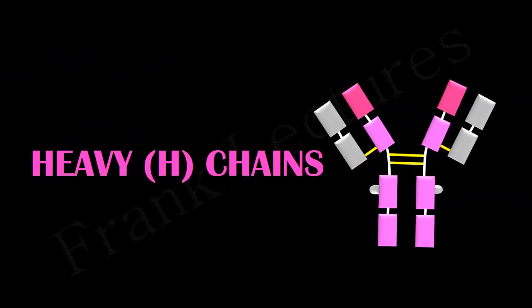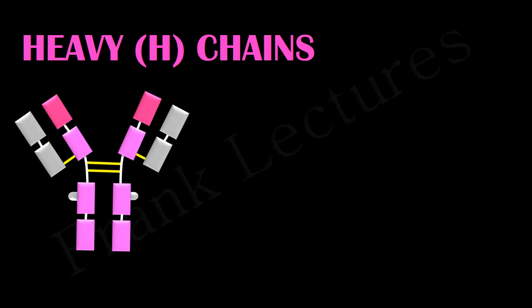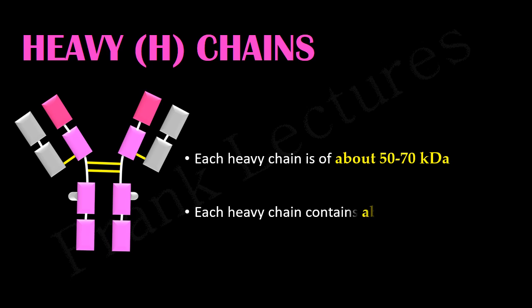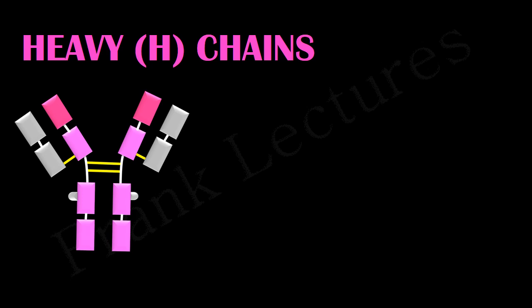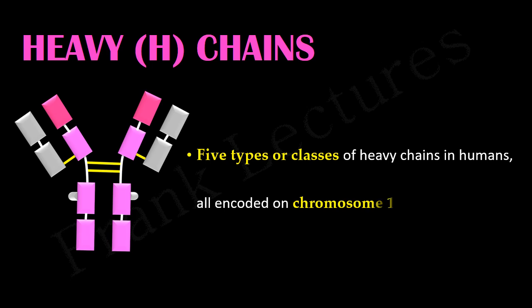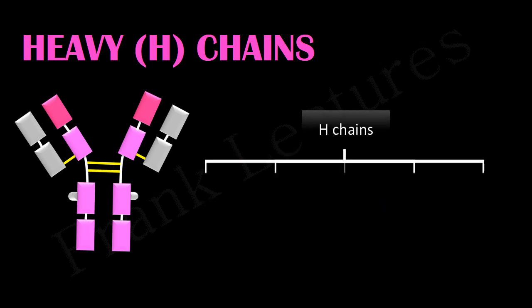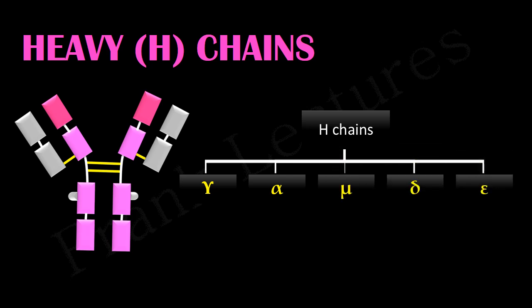Heavy chains: Heavy chains are the longer subunits of the antibody structure. Each heavy chain has a molecular weight of about 50 to 70 kilo Daltons and each heavy chain contains about 440 amino acids. There are five types or classes of heavy chains in humans, all encoded on chromosome 14. These five classes are designated by lowercase Greek letters: gamma, alpha, mu, delta, and epsilon. They are also written as G, A, M, D, and E, respectively.